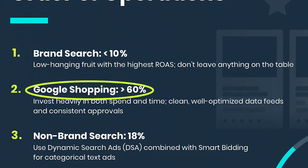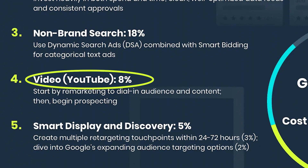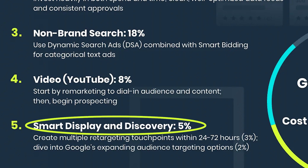We have Google Shopping at more than 60% of spend. We have non-branded search making up about 18% of spend. YouTube making up about 8% of spend, focused on remarketing but could tap into prospecting as well. And smart display and discovery focused on about 4% of spend — this one's all about being omnipresent on multiple retargeting touch points. You can see the importance of allocating to non-branded search, YouTube, smart display and discovery, but why is Google Shopping such a big part of the funnel?